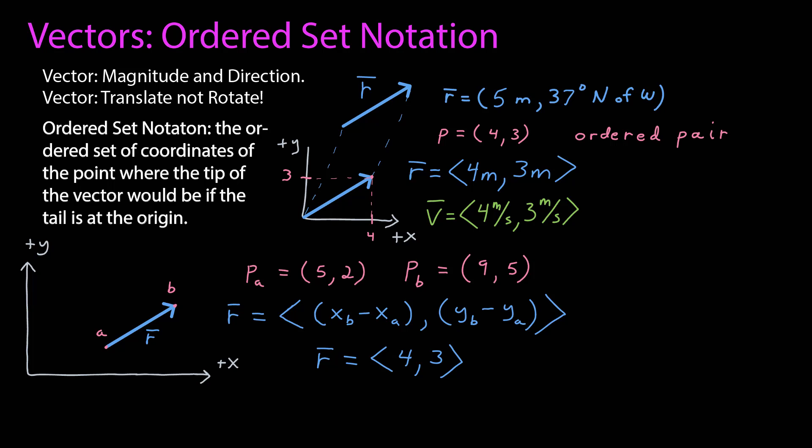9 minus 5 is 4, and 5 minus 2 is 3. You can see how that works if you look at the graph. If point B has the coordinates (9, 5), that means if I draw a line straight to the x-axis, it will be at the x-coordinate 9. If I draw a line straight to the y-axis, it'll be at coordinate 5. Same thing with point A for 5 and 2.